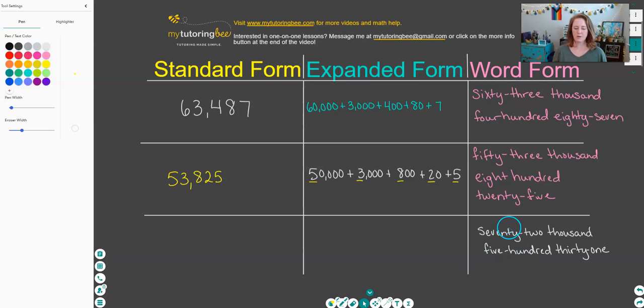So in our standard form, let's go ahead and read this number in word form, and then we can write it in standard form: 72,531. 72,000—so that tells me that's where the comma is. 500—so the five is in the hundred spot. 31—so we've got three and a one.